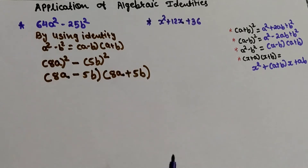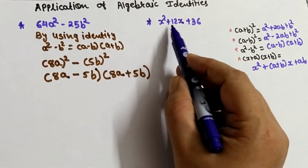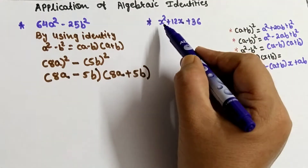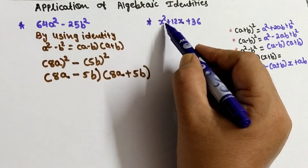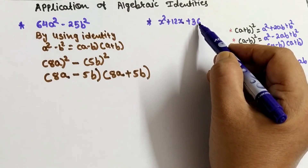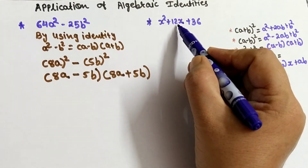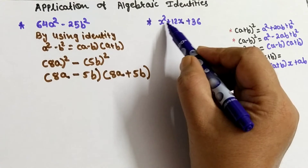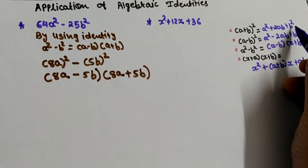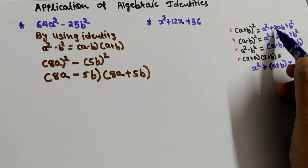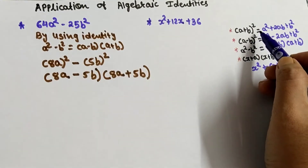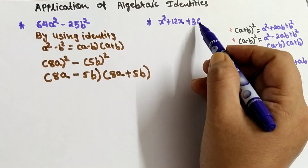Now we will take one more example: x² + 12x + 36. To factorize this expression, we look at the first term x², the last term 36 which is 6², and the middle term 12x. The similar identity is (a + b)² = a² + 2ab + b². Since there is a plus sign with the middle term, we will use the identity (a + b)² to factorize x² + 12x + 36.